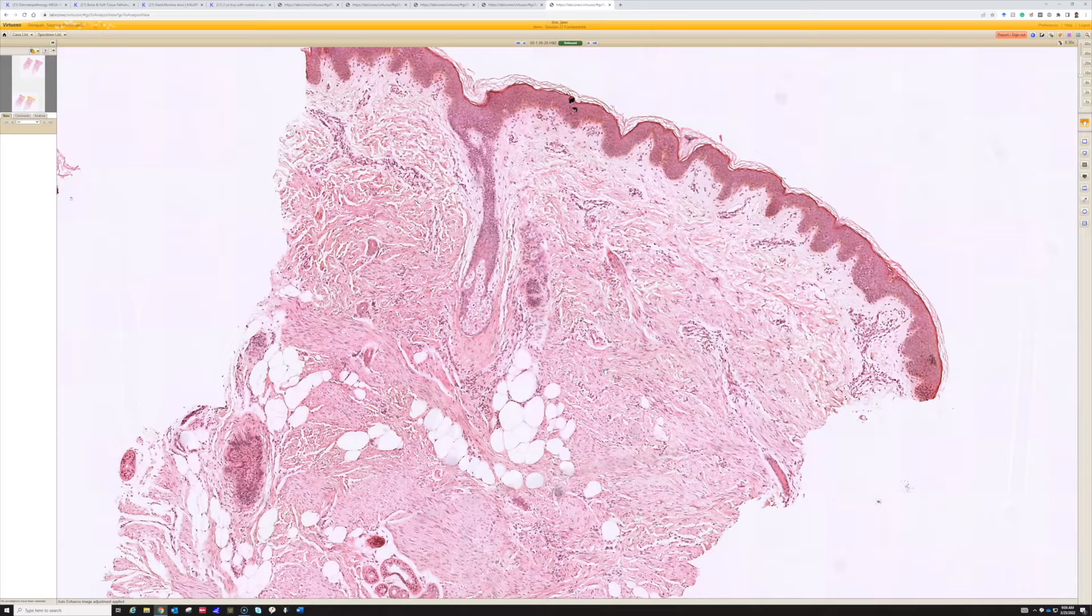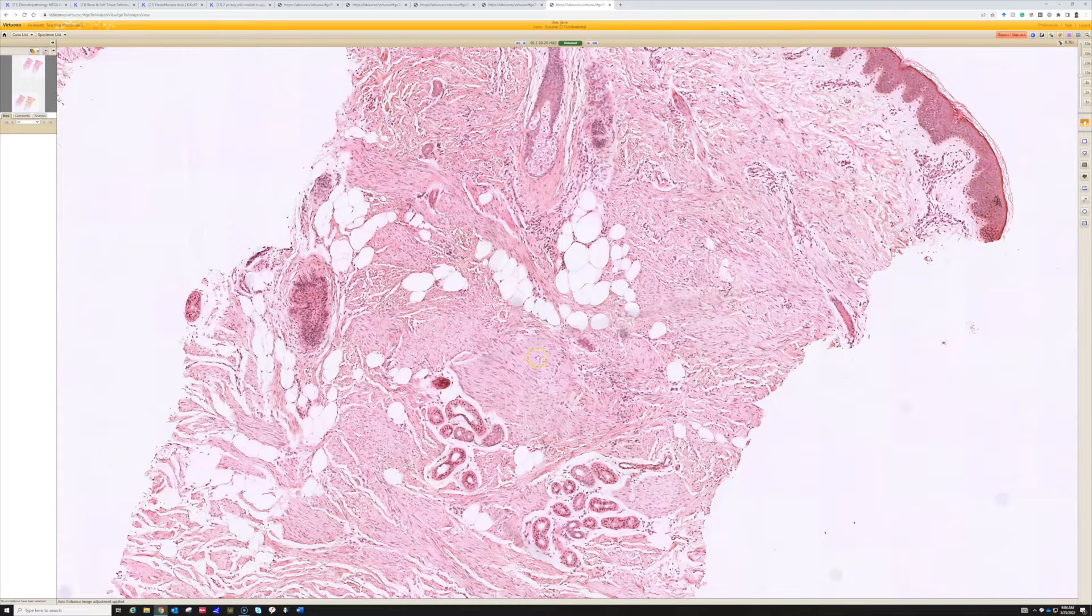And even though the name sounds like dermatofibroma, totally unrelated. I think they look very different from dermatofibromas. And also the name says myo, so you would think it would either be muscle or even myofibroblastic. But in fact, I don't know for sure, but I suspect that someone thought that these look like bundles of smooth muscle, but they're actually not.